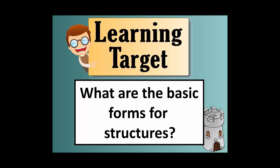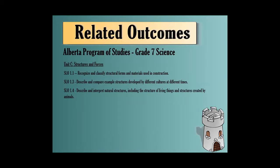Hello and welcome to the third lesson in the Structures and Forces Unit for Science 7. In this lesson we're going to look at the basic forms for structures — there are three basic forms we'll cover. We're recognizing and classifying structural forms and materials used in construction. We're describing and comparing examples of structures developed by different cultures at different times, and we're going to describe and interpret natural structures, including the structure of living things and structures created by animals, and how those are classified as structural forms.